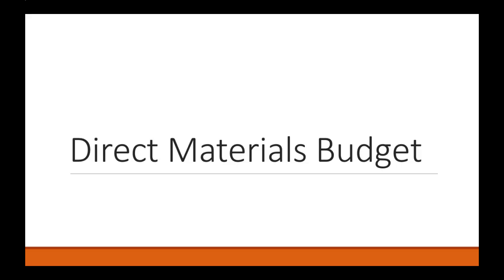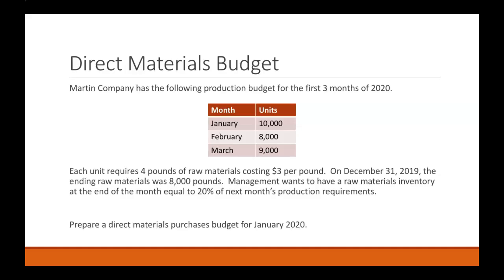Let's take a look at a direct materials budget example. The problem says Martin Company has the following production budget for the first three months of 2020 in the chart given to us, along with some additional information. Each unit requires four pounds of raw materials costing three dollars per pound. On December 31st, 2019, the ending raw materials was 8,000 pounds. Management wants to have a raw materials inventory at the end of the month equal to 20% of next month's production requirements. With all of that information, we can prepare a direct materials purchases budget for January 2020.